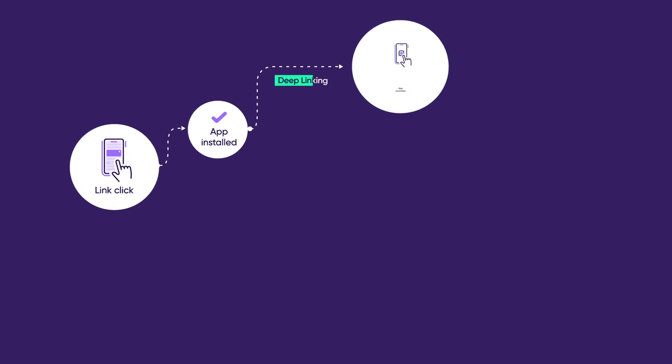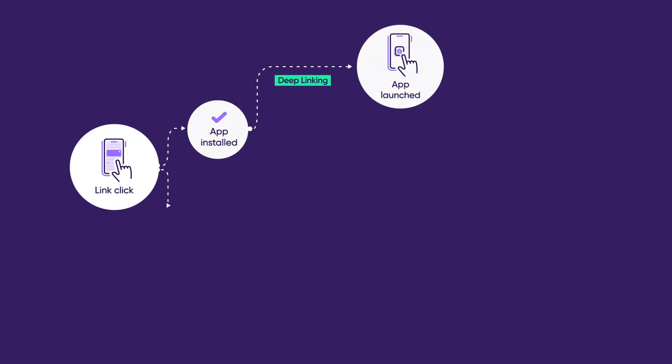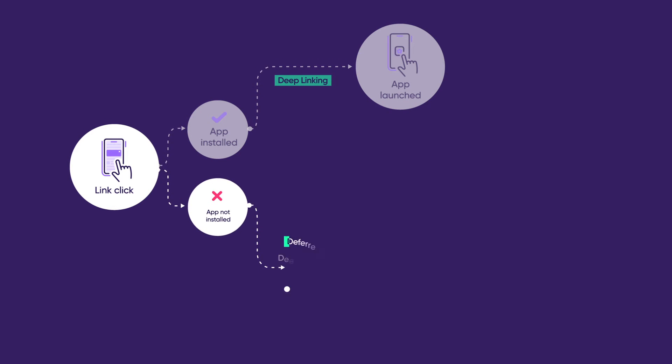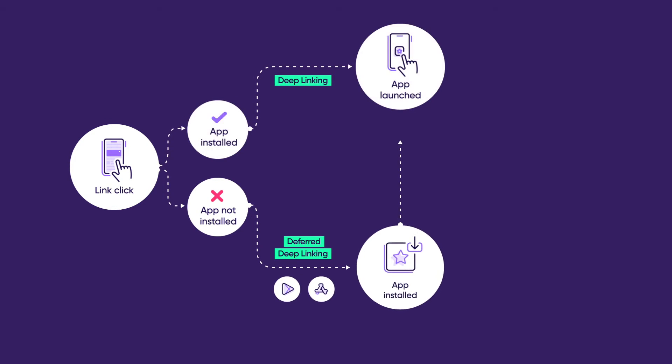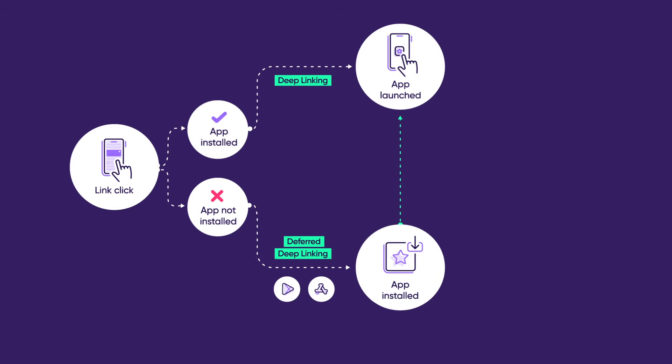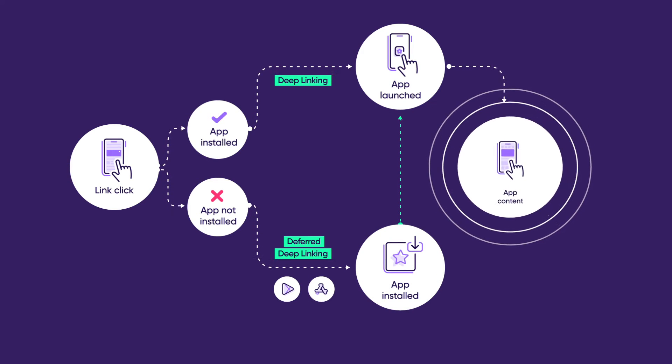So how does it work? By using a deep linking engine, you can create two journeys — one for users with the app, and one for users without the app. App users seamlessly travel to the in-app content, while non-app users experience deferred deep linking, where they're first directed to download the app and then sent to the intended in-app content.